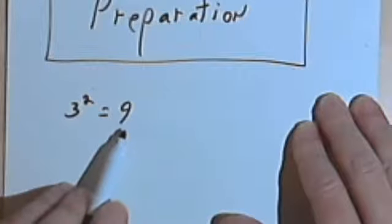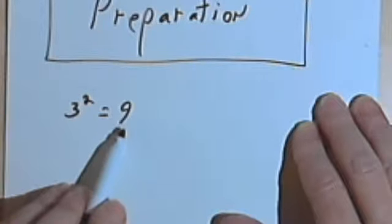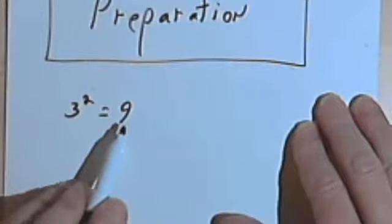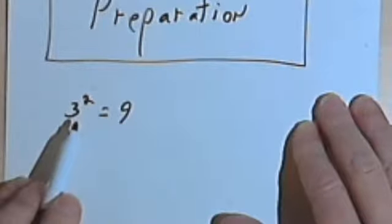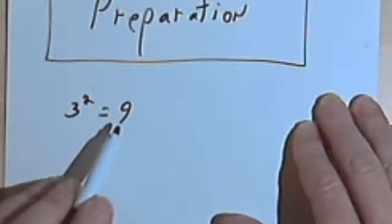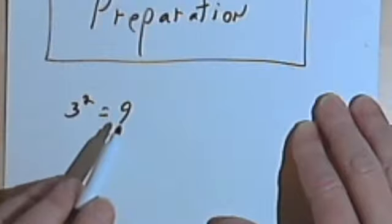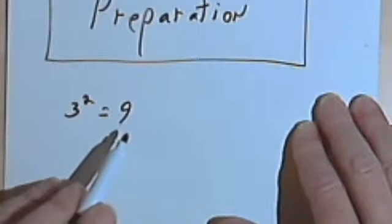Now the main thing is I want you to recognize that 9 is a perfect square. In other words, 9 is 3 squared. And I want you to recognize all of the perfect squares up to what happens when you have 12 times 12.